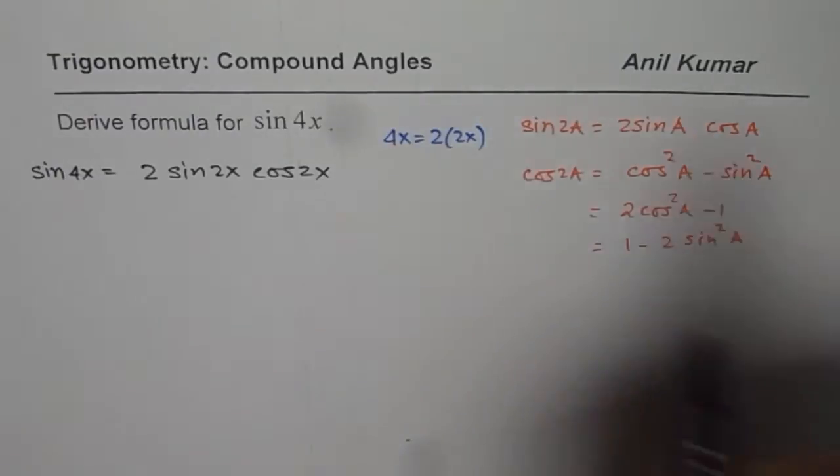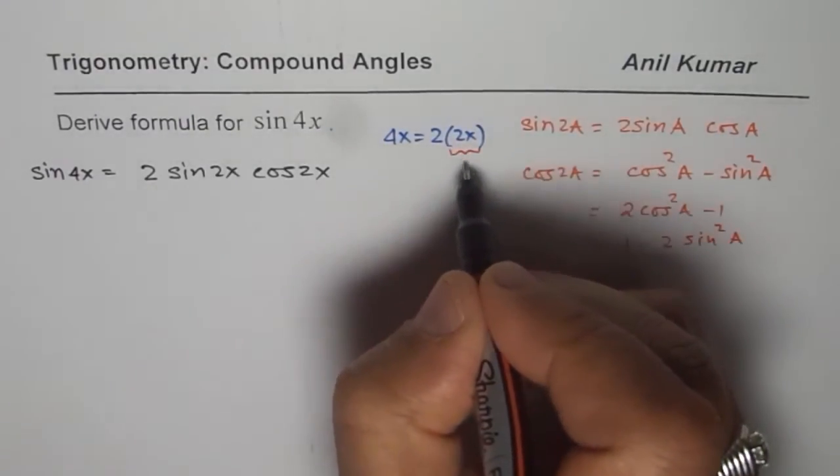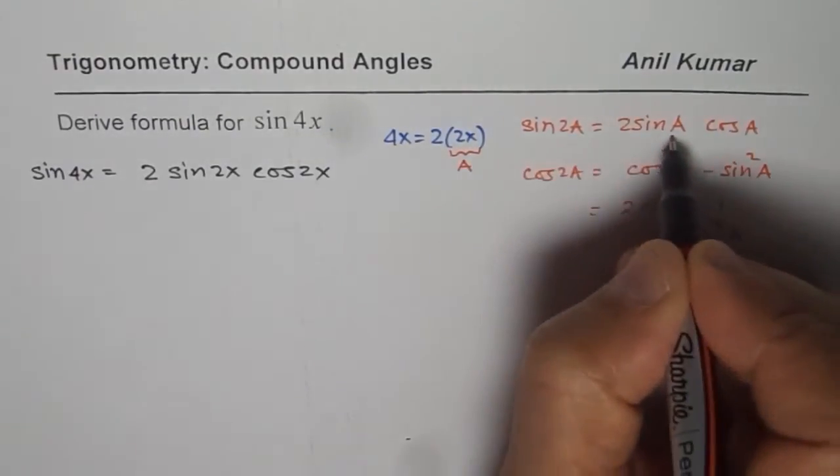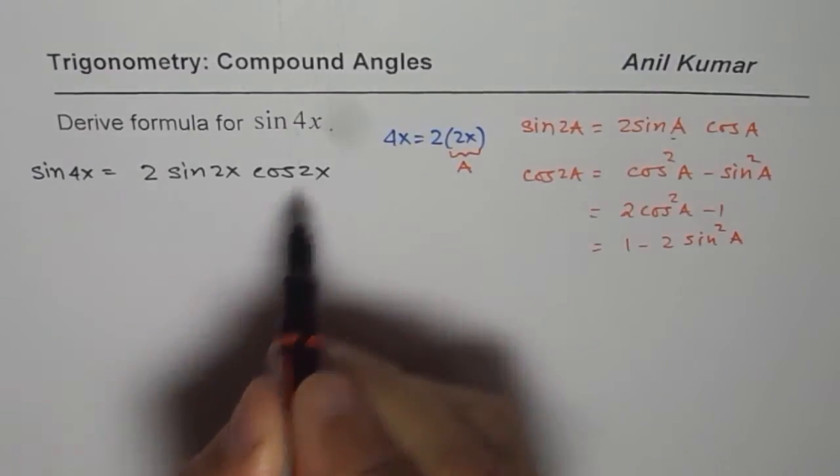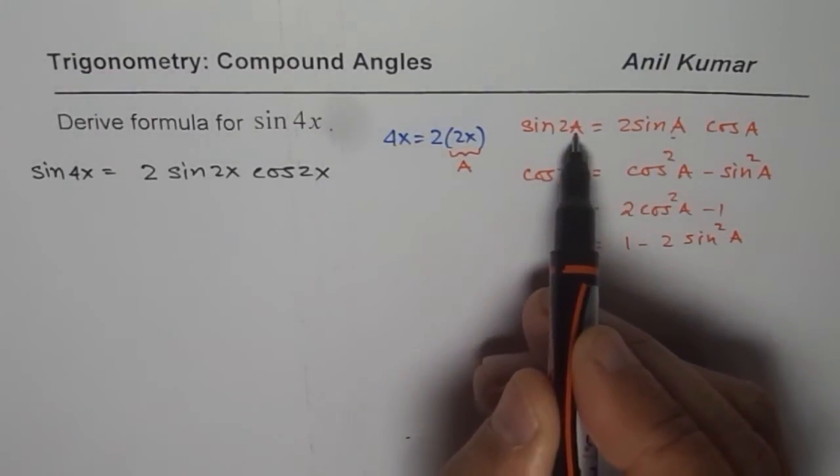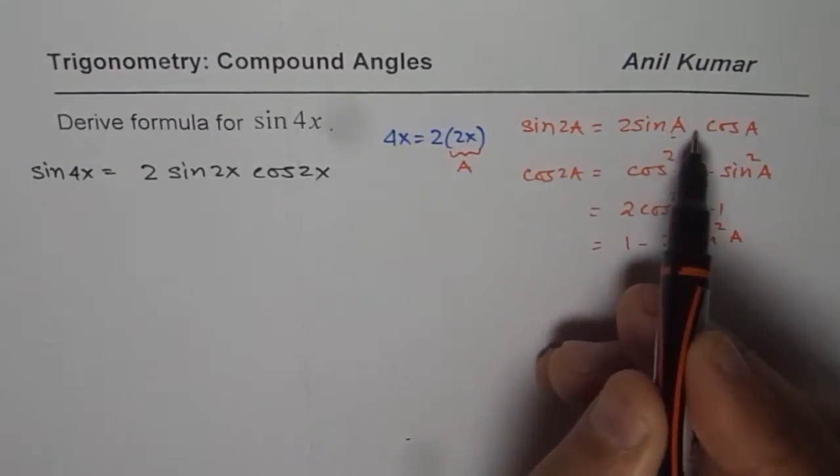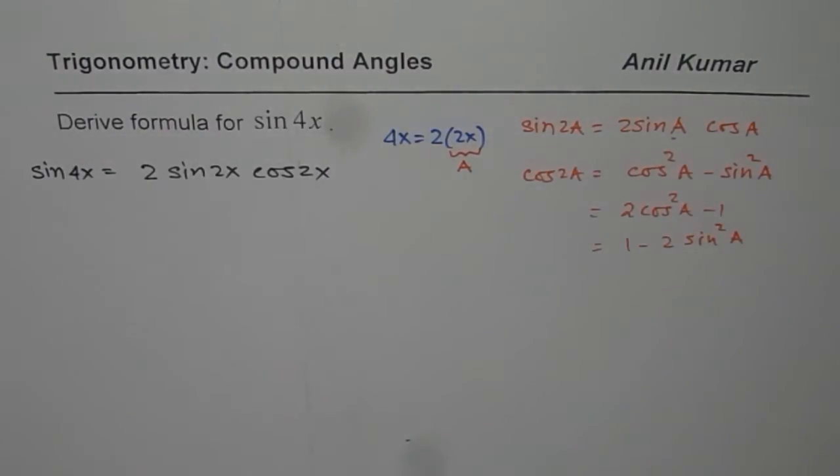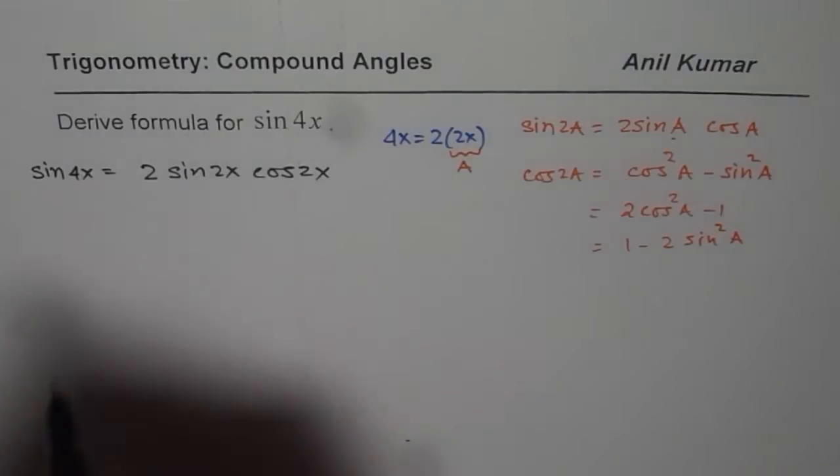So for us, 2x becomes a. We applied the formula sin of 2 times 2x. Replace a with 2x and you get your formula. That is how you expand it.